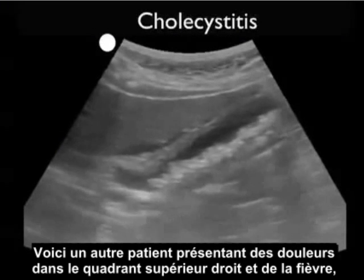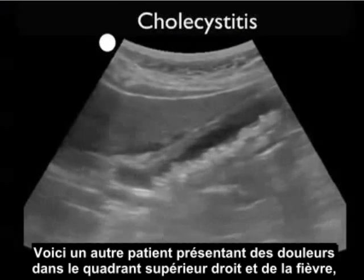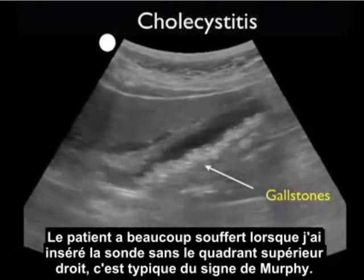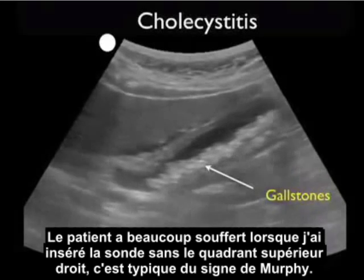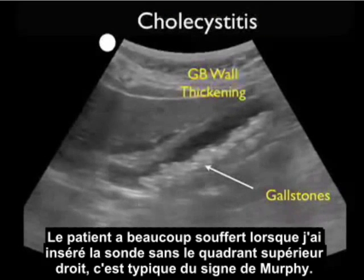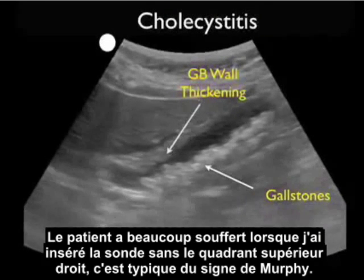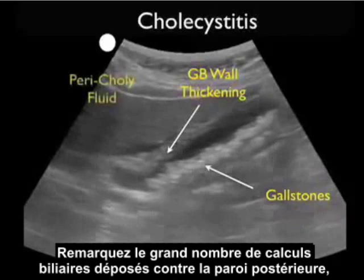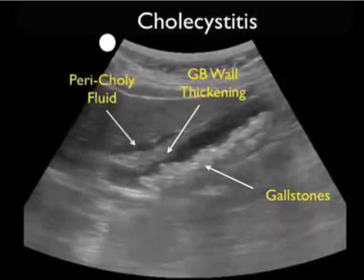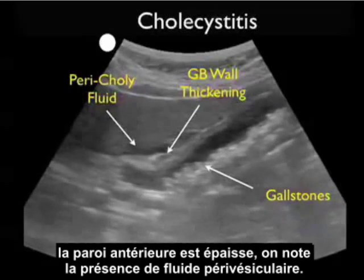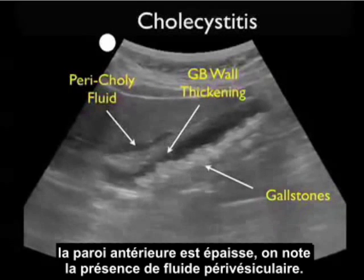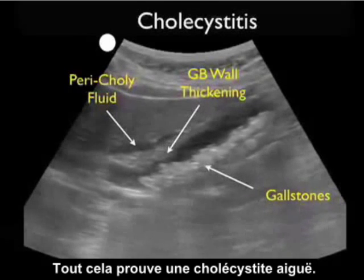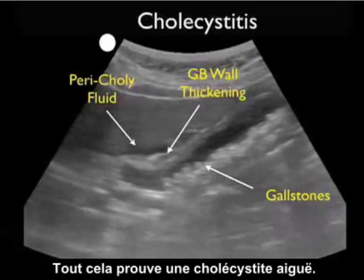Here's another patient who presented with right upper quadrant pain and fever, and had a great deal of pain when I pushed the probe into the right upper quadrant, consistent with a sonographic Murphy sign. Notice the large amount of gallstones layering out along the back wall of the gallbladder, the gallbladder wall thickening of the anterior wall, and the presence of pericholecystic fluid — all consistent with acute cholecystitis.